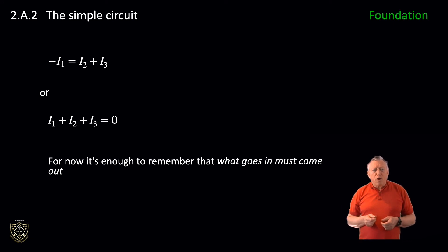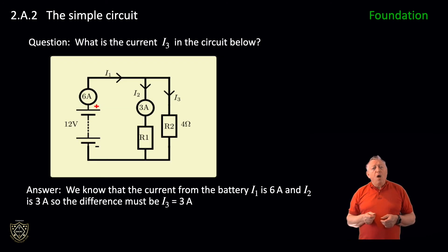Let's do a question. What is the current I3 in the circuit shown? Well, we know that the current from the battery I1 is six amps, and I2 is three amps. So the difference must be I3 equals three amps.